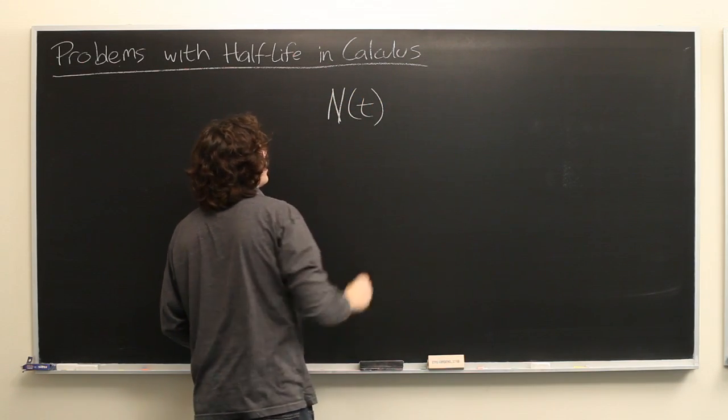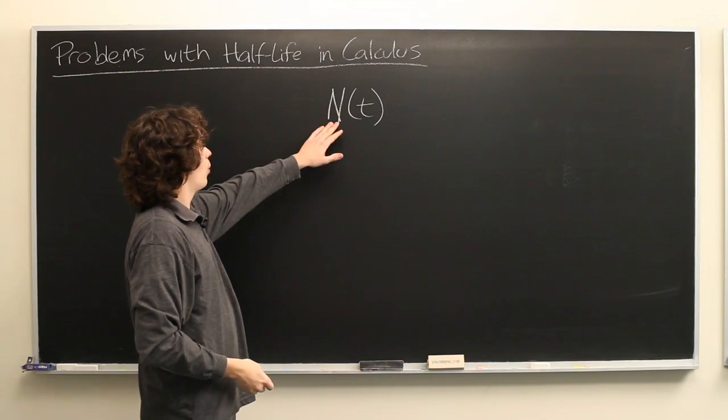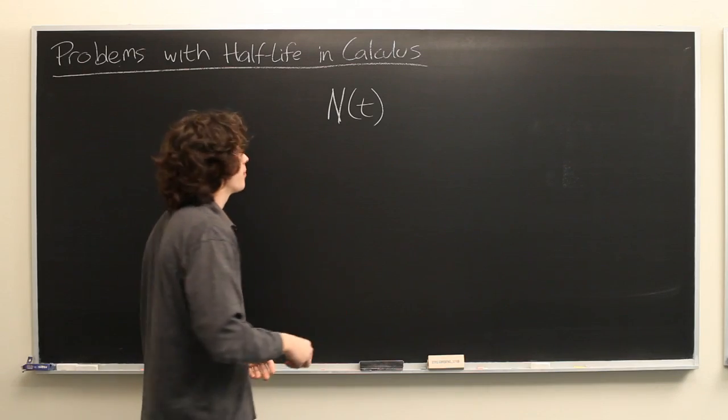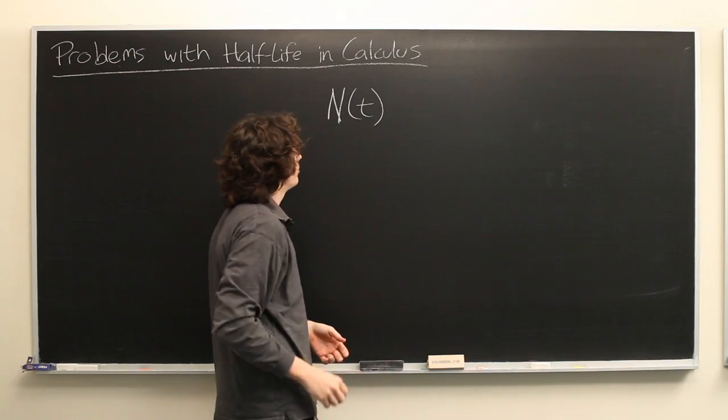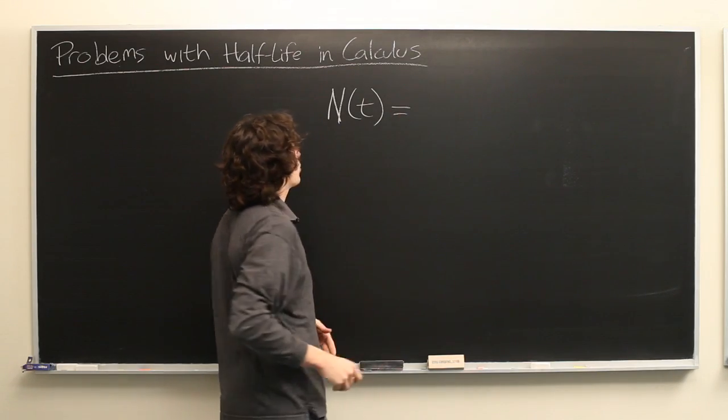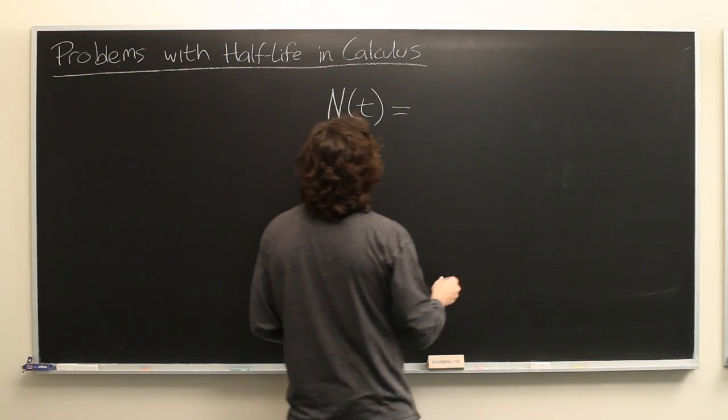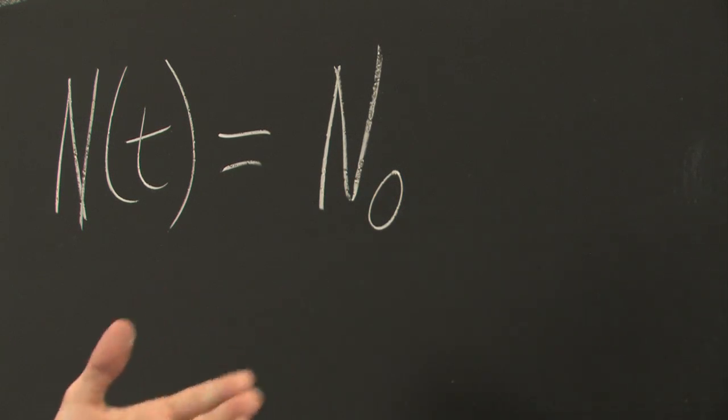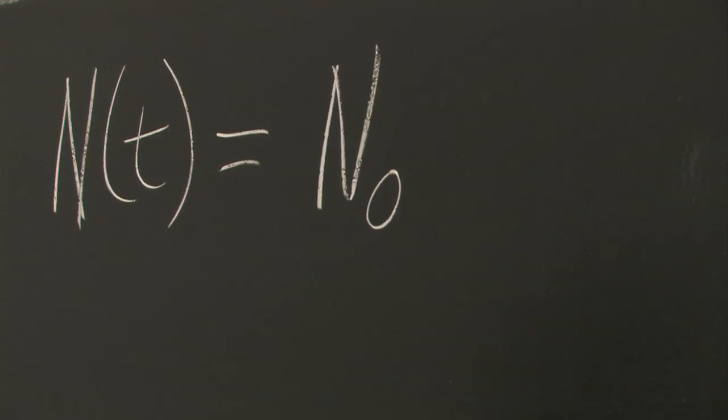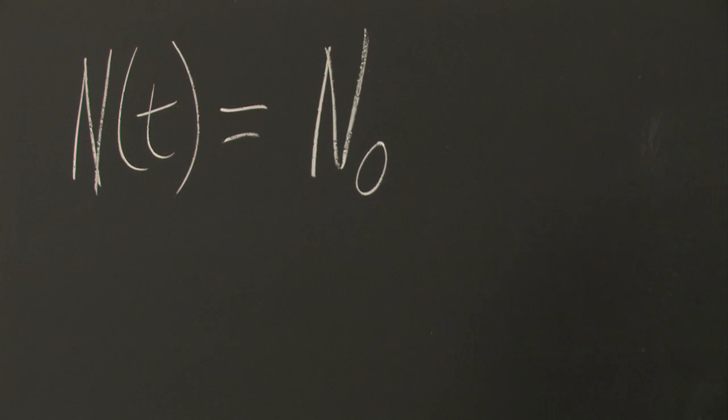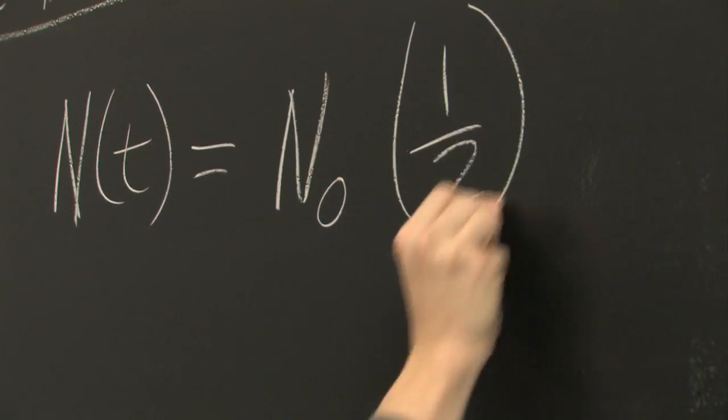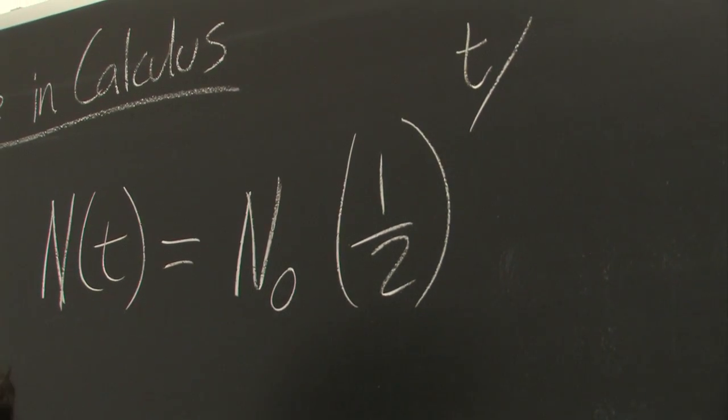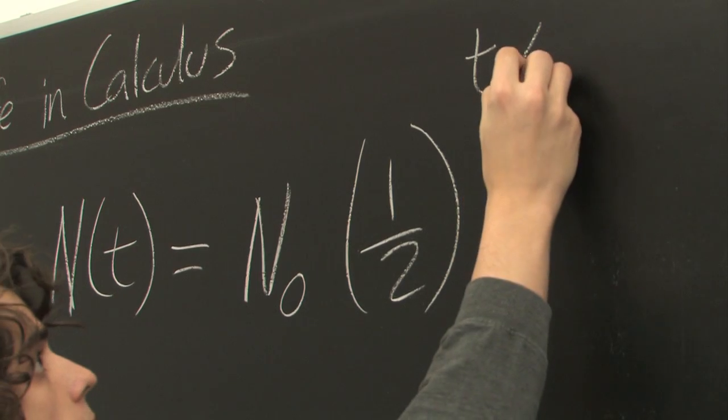It's frequently written N as a function of t, where N is the number of some substance, might be number of grams or number of atoms, and t is time. In this case, we'll say that t is measured in hours. This formula is typically written with N0, which is the original quantity of something, or how much it starts off with, times one-half raised to the power of t divided by the half-life, which we'll call h here.